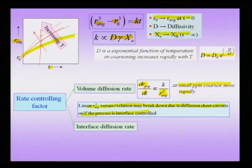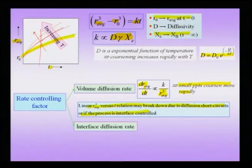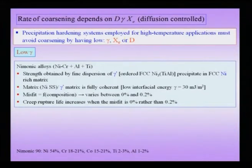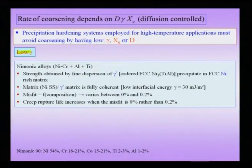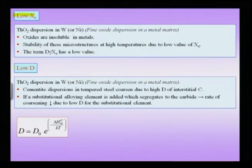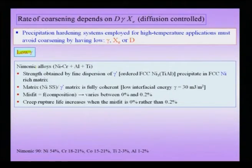With time, precipitates coarsen and transition from metastable to equilibrium precipitates, causing a loss in hardness. To retain hardness, the key lies in keeping a small value of the product D·γ·xc. Three strategies are available: maintain a low interfacial energy γ, a low equilibrium solubility xc, or a low diffusivity D, such that the overall coarsening rate remains small.